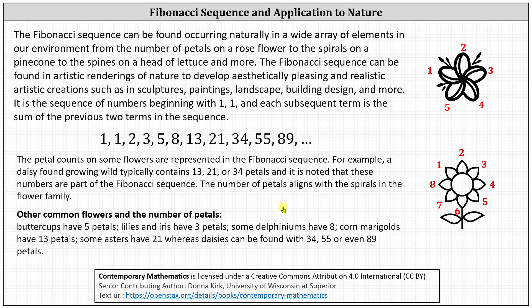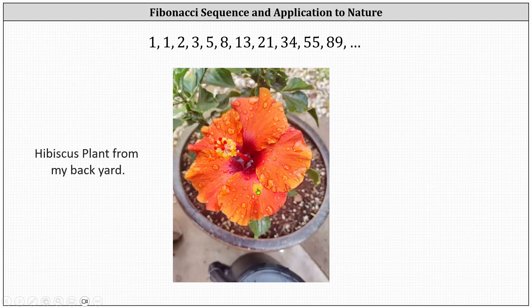I put this to the test by going into my backyard and took a picture of this hibiscus plant, and notice the flower does have one, two, three, four, five petals, which is in the Fibonacci sequence.